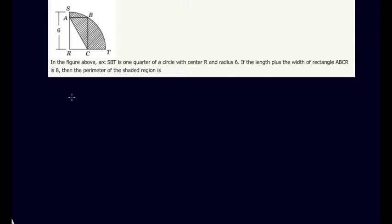So we can break up the perimeter and rewrite it in terms of its components. So we're trying to find what arc SBT, this is the first component of our shaded region, is this part here, SBT.